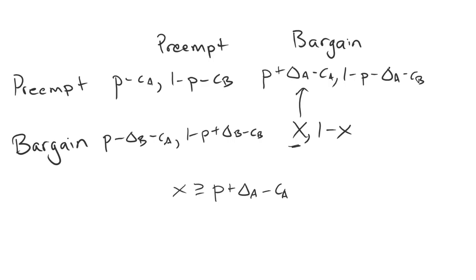That's only one component of it, though. For it to be a Nash equilibrium, neither one of them has to deviate. So this 1 minus X value better be better than deviating for B and getting 1 minus P plus delta B minus CB instead.